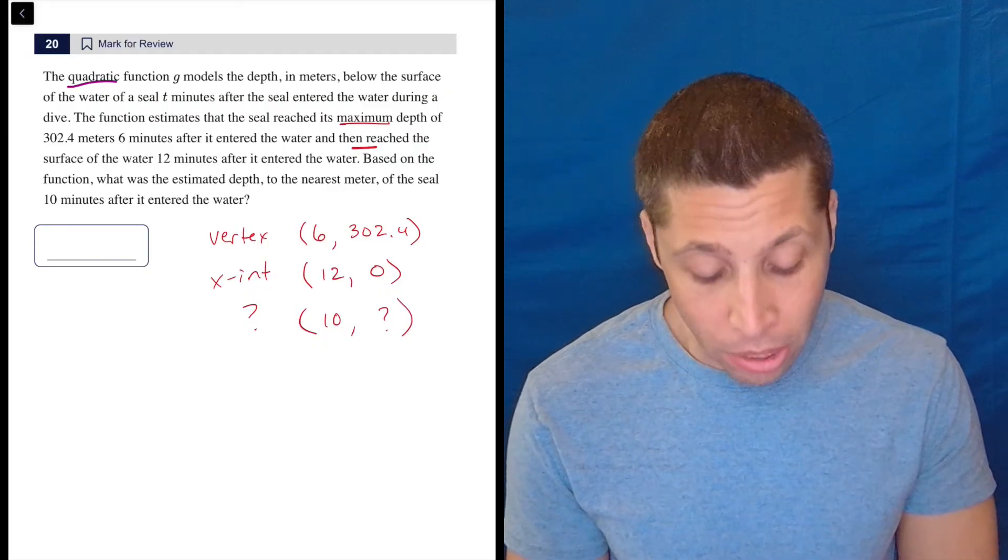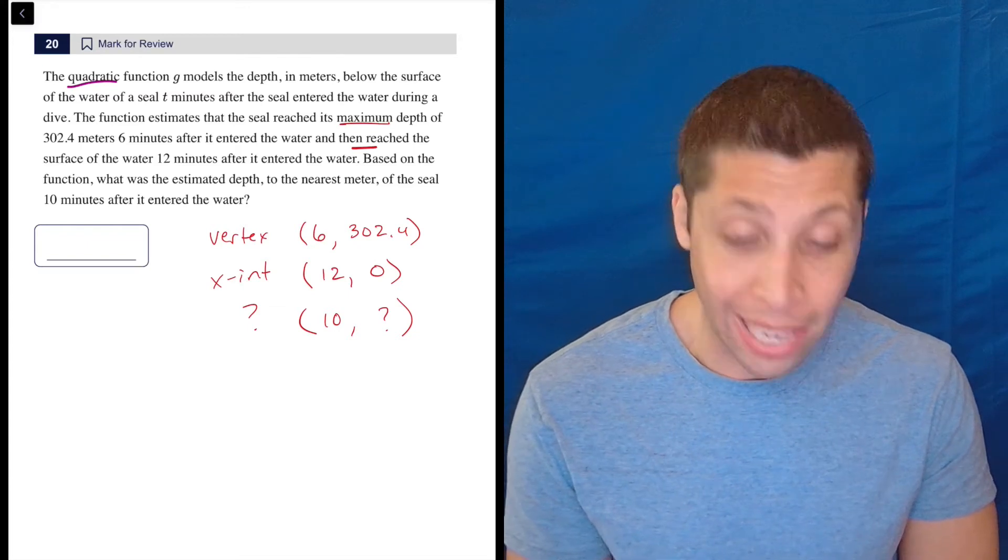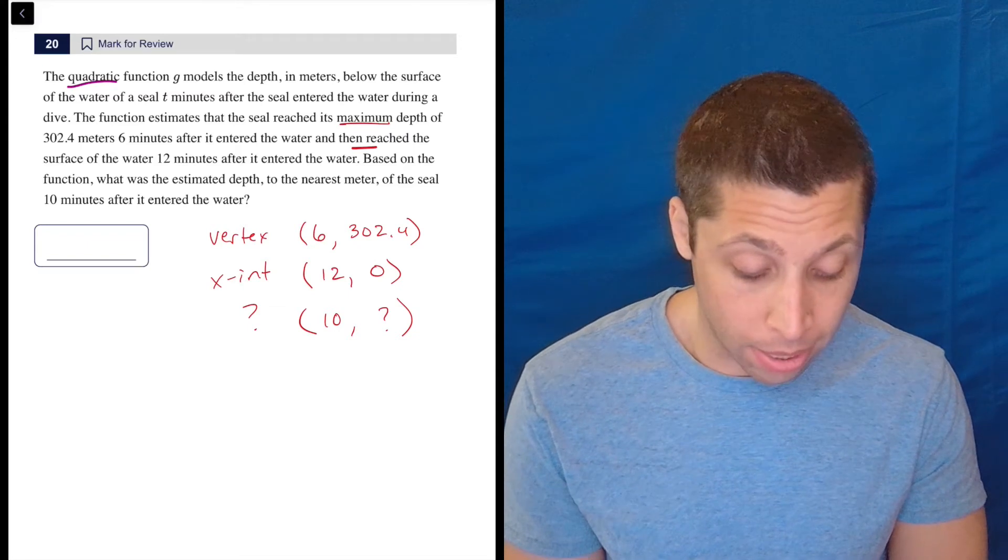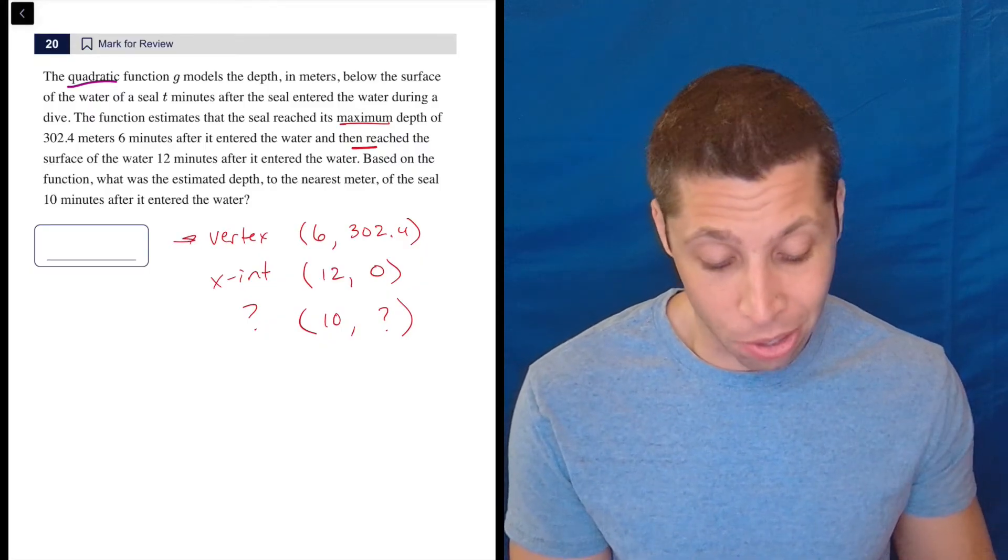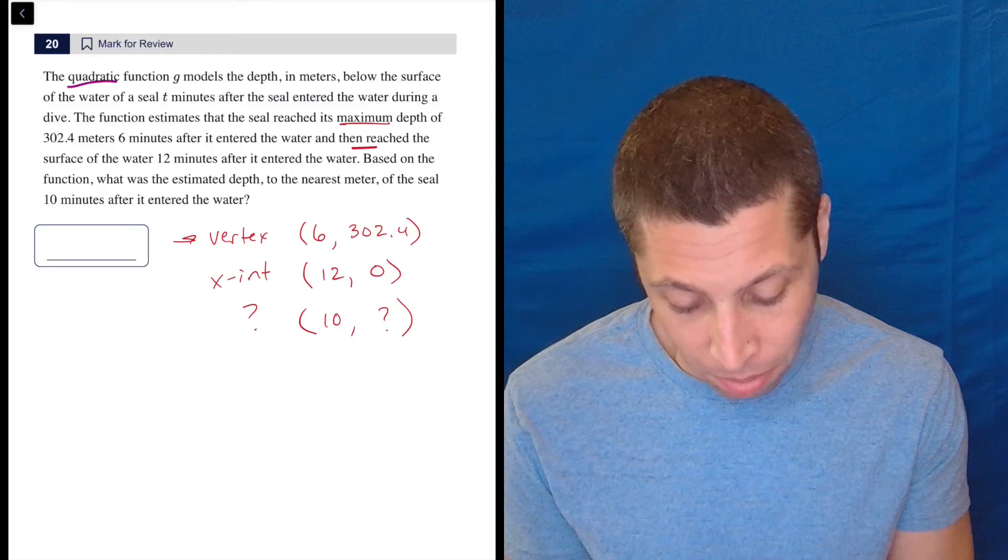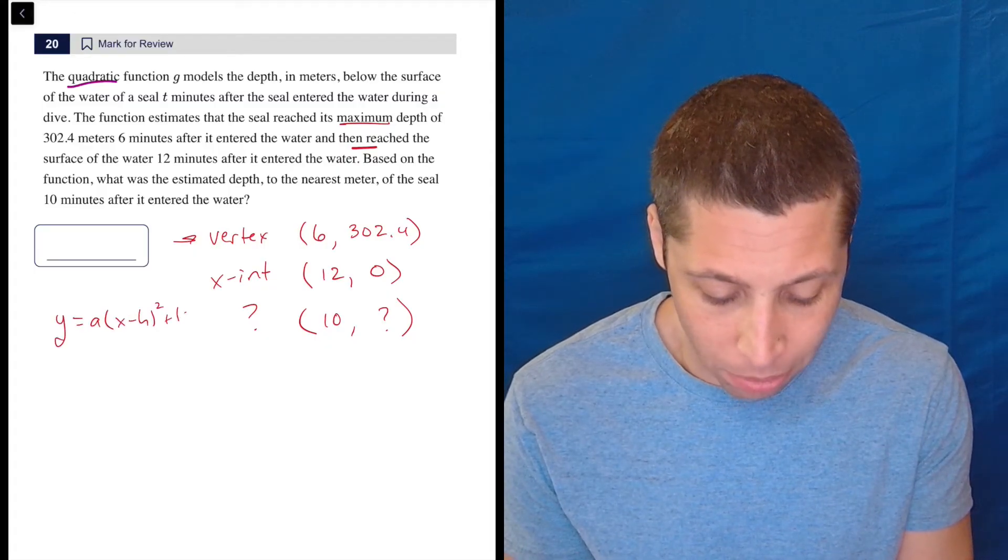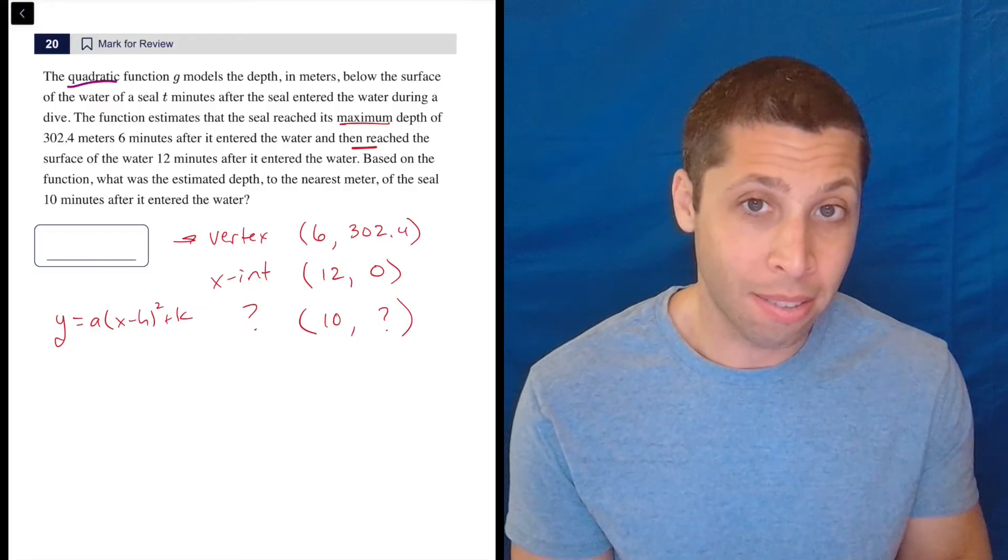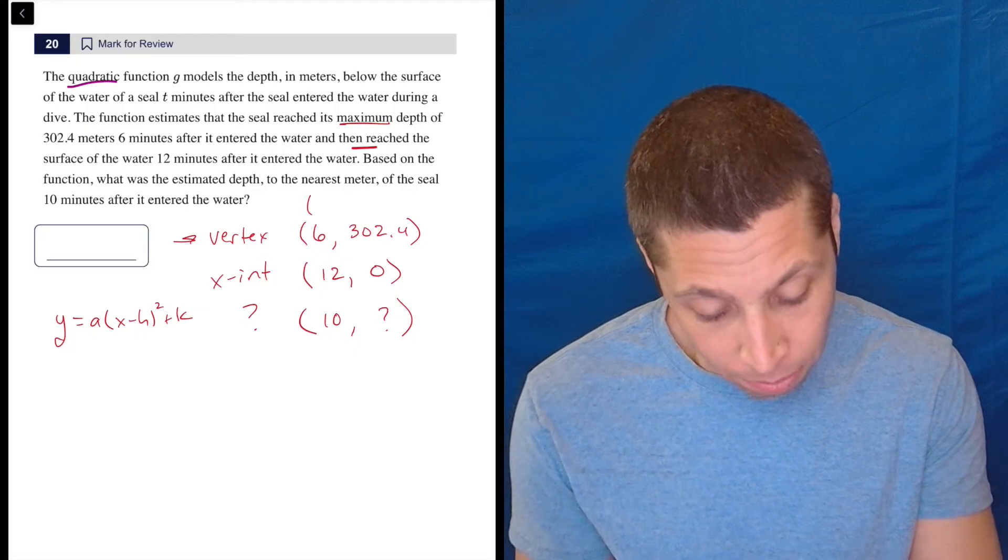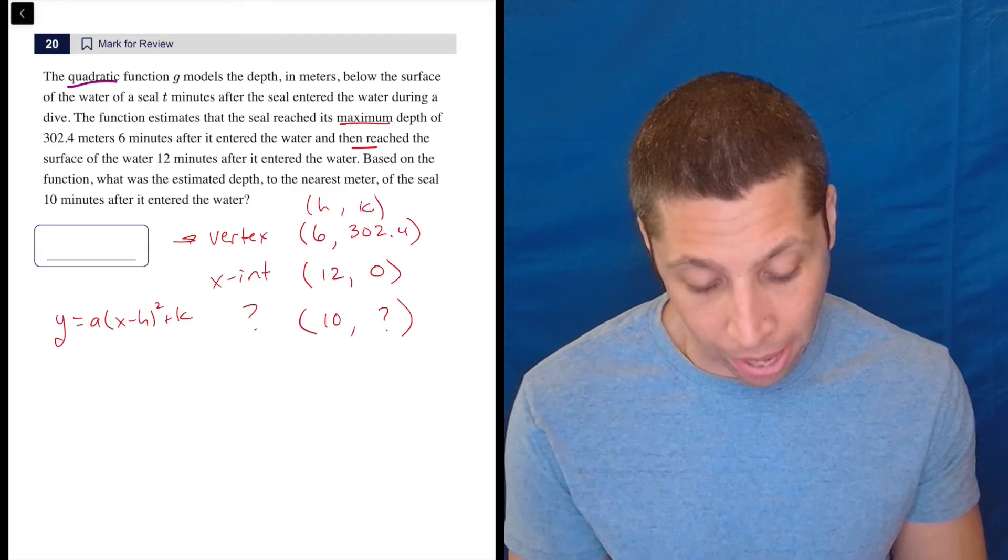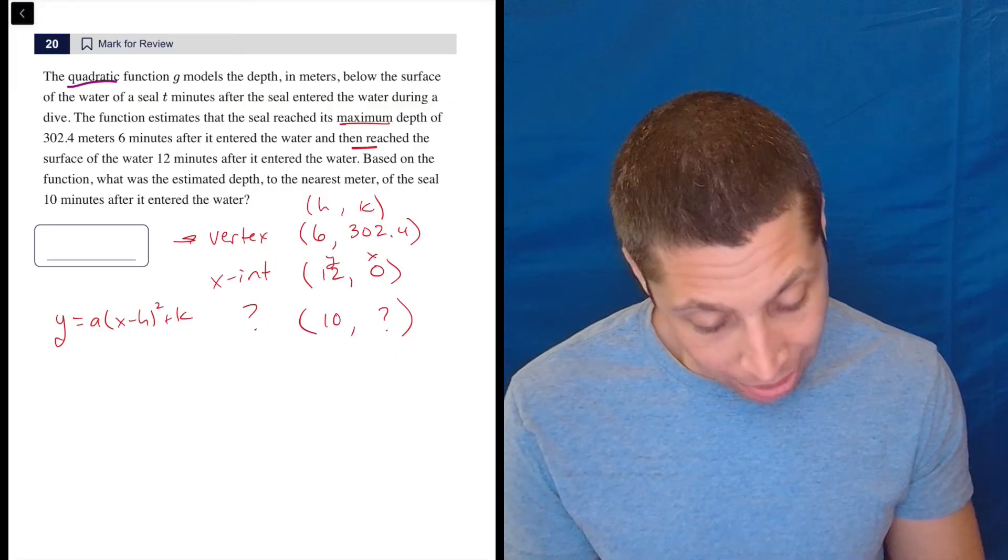So there are a couple things we can do here. My instinct is I really want to get the equation for this. And so if I have the vertex, there's a vertex formula I can use. So we should remember that Y equals A times (X minus H) squared plus K is that formula. And so we can plug in the H and the K, which are the vertex. So that's not so bad. We can also plug in for Y and X this other random point.